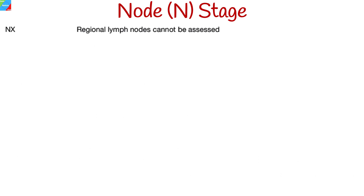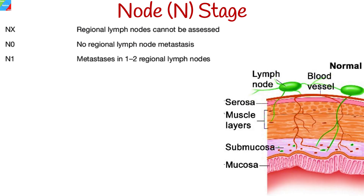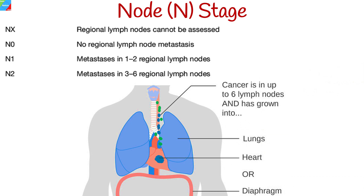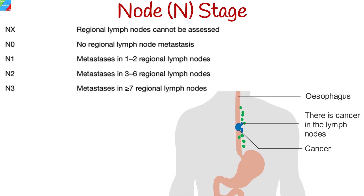NX means that lymph node involvement cannot be assessed, while N0 indicates that there is no regional lymph node metastasis. N1 shows that the cancer has spread to 1 to 2 nearby lymph nodes in the thoracic cavity. N2 means that the cancer has spread to 3 to 6 regional lymph nodes in the mediastinum or adjacent to the trachea or bronchi. N3 indicates that the cancer has metastasized to more than 7 lymph nodes beyond the mediastinum, including those in the upper chest above the collarbones or near the neck.